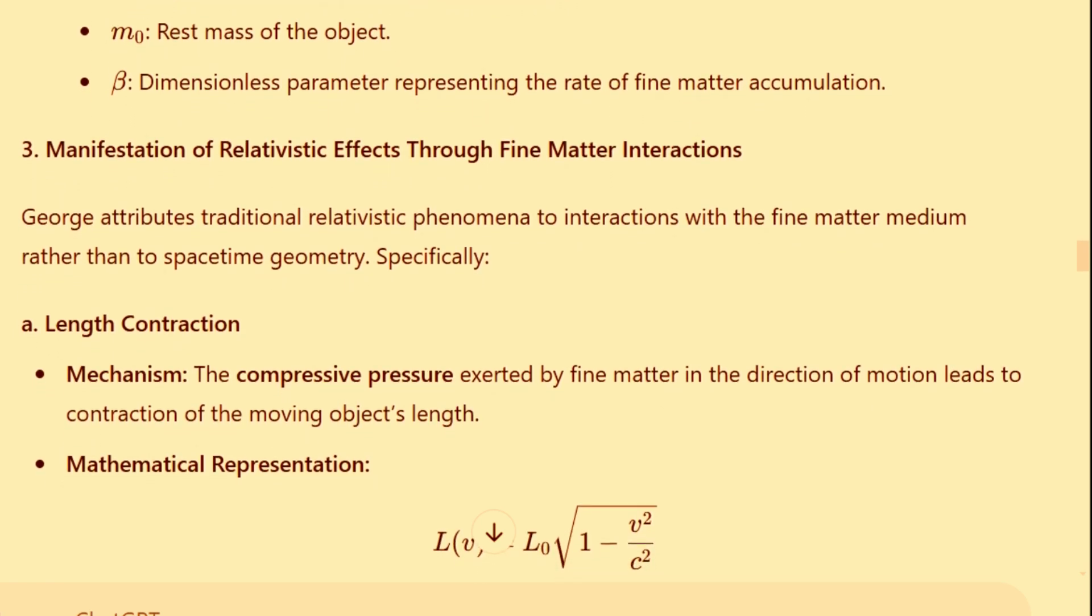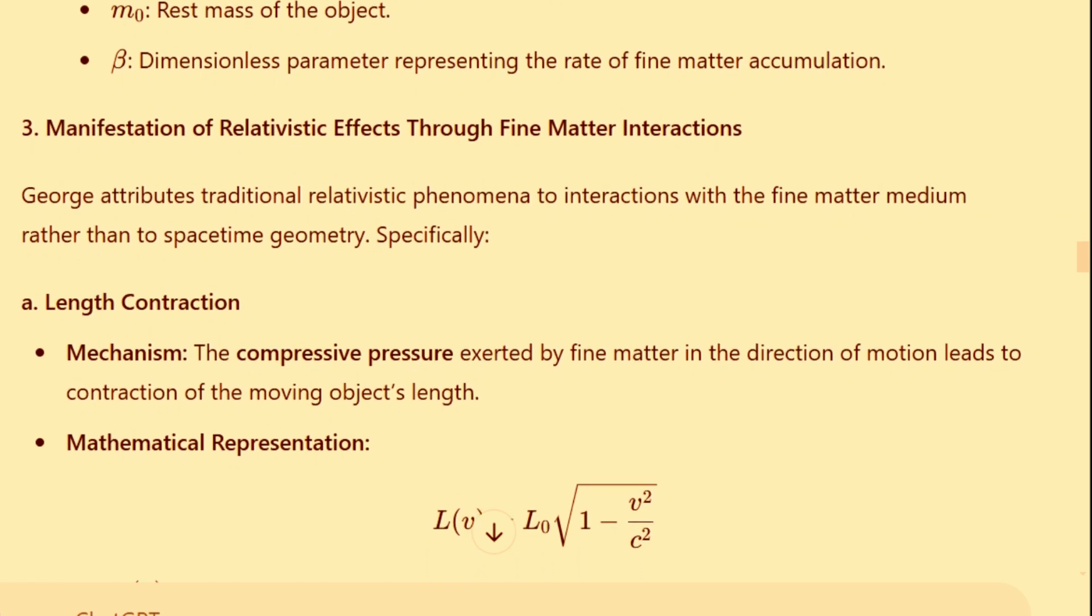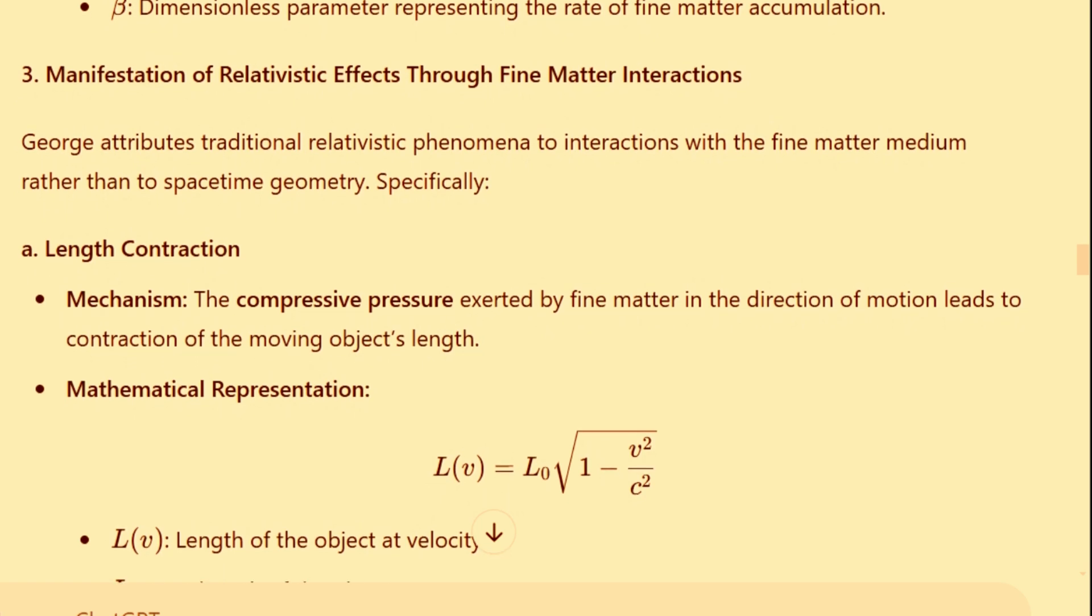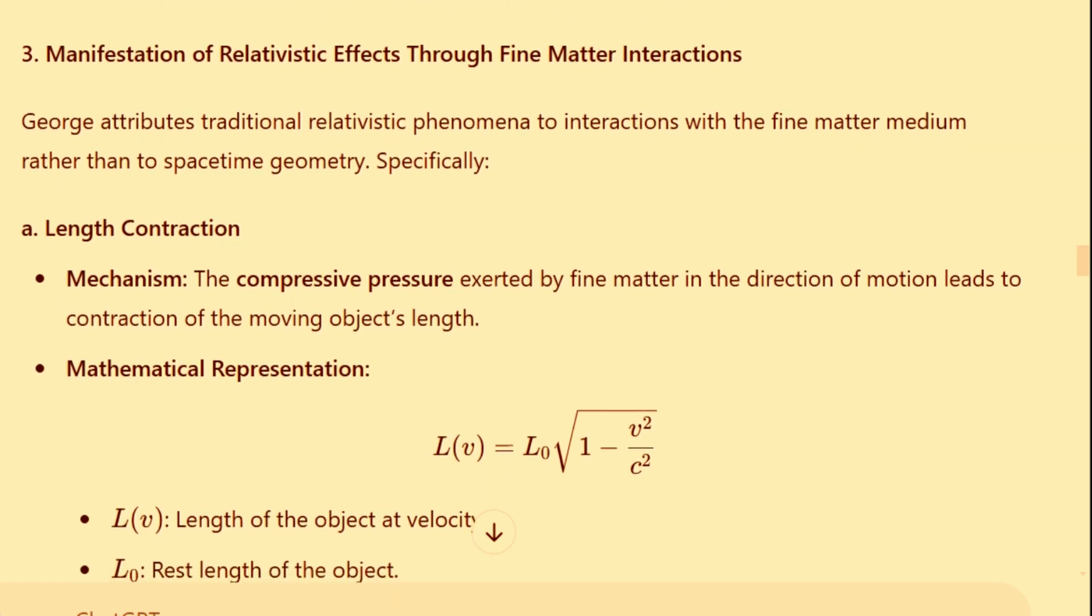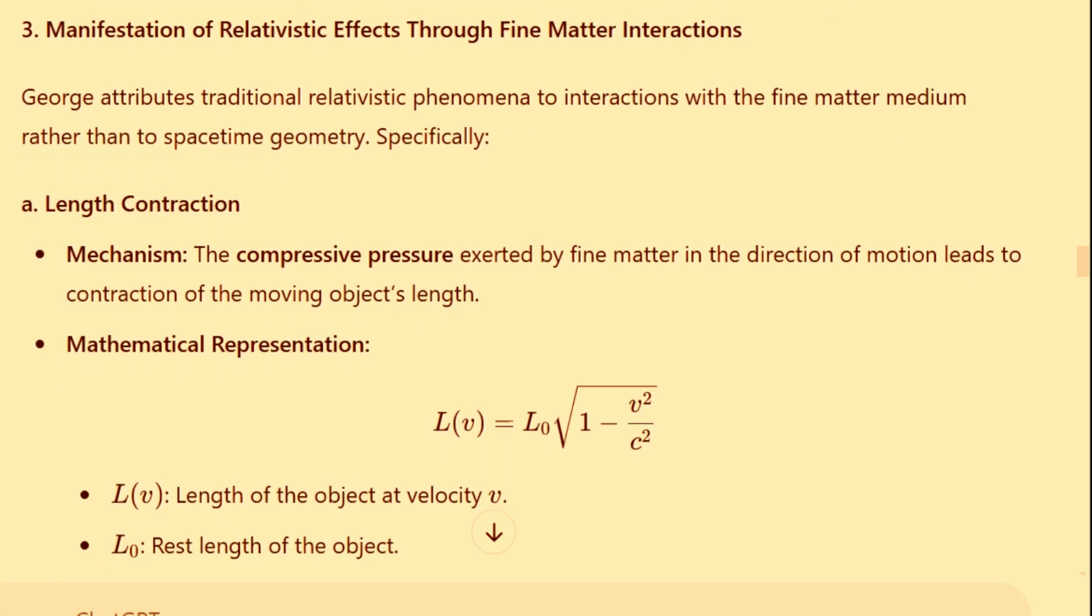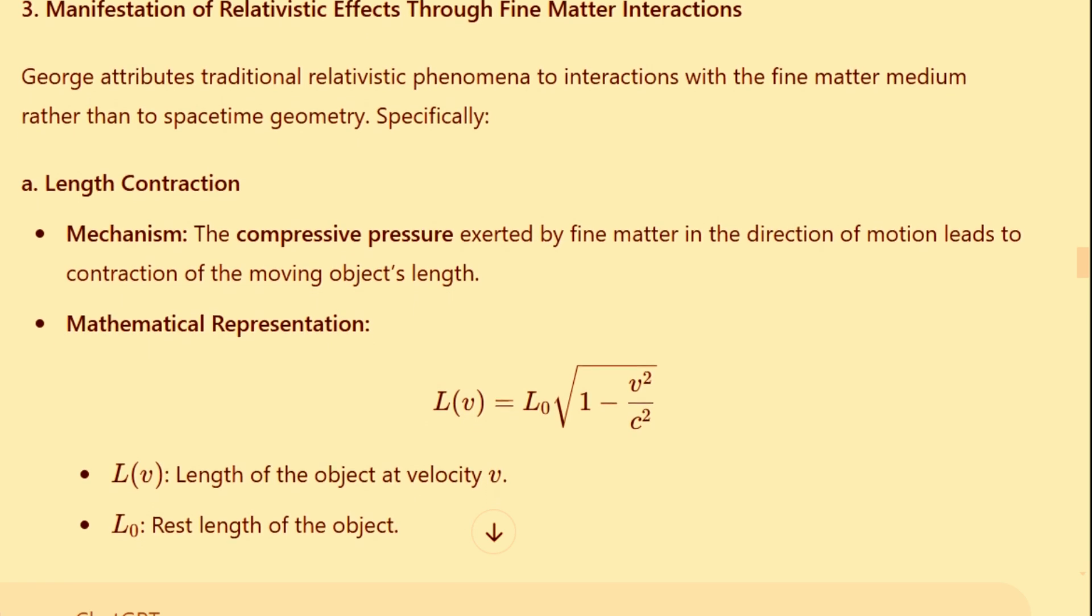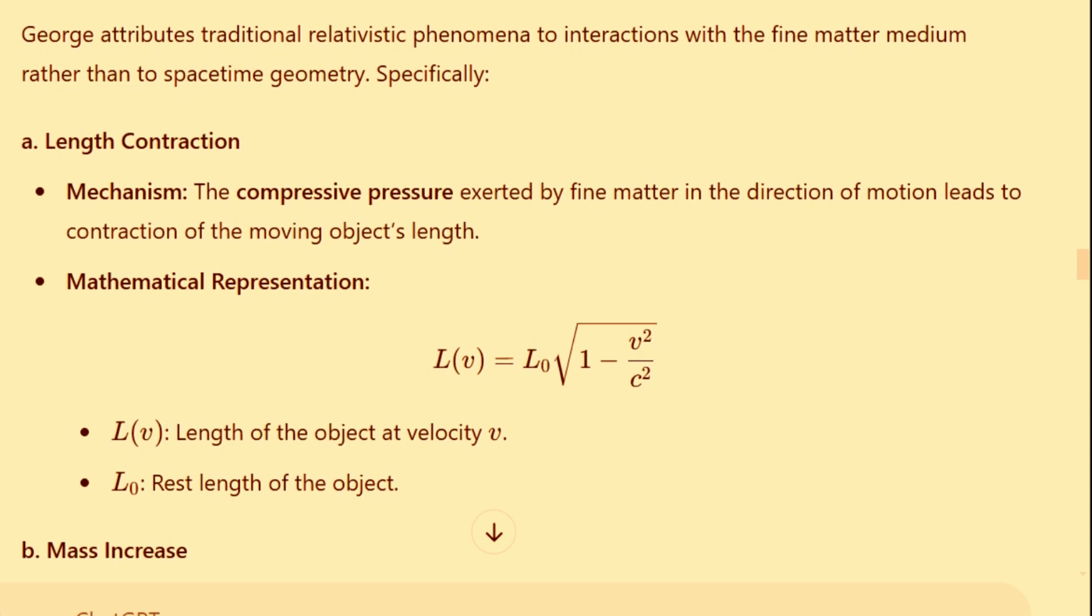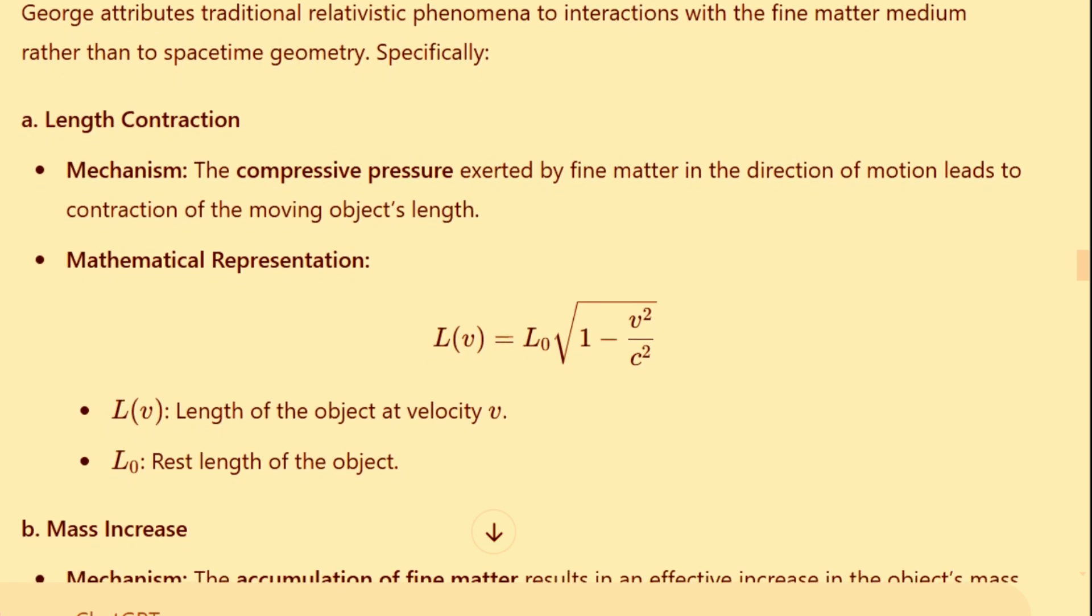3. Manifestation of Relativistic Effects Through Fine Matter Interactions. George attributes traditional relativistic phenomena to interactions with the fine matter medium rather than to space-time geometry. Specifically, A. Length Contraction Mechanism: the compressive pressure exerted by fine matter in the direction of motion leads to contraction of the moving object's length.